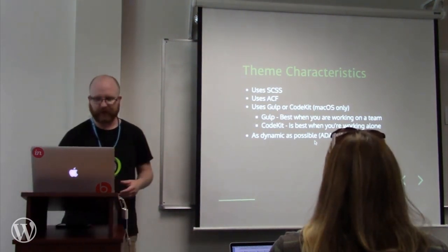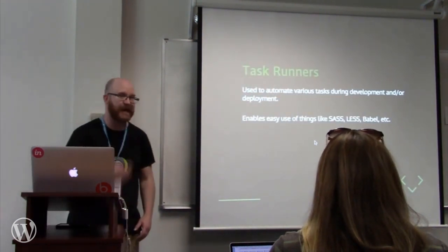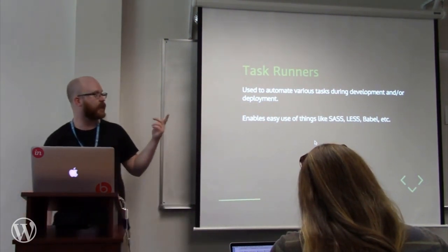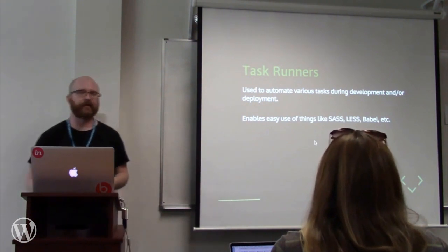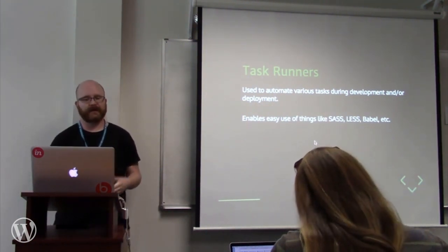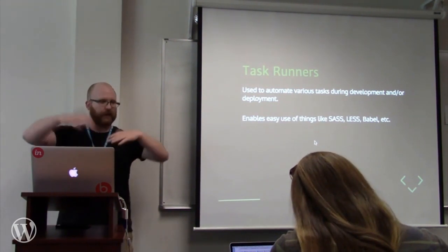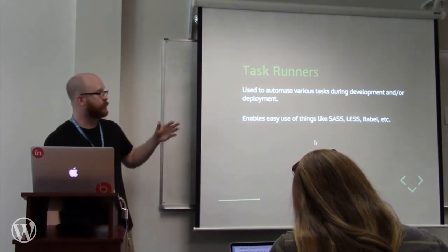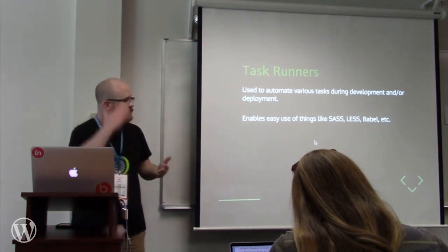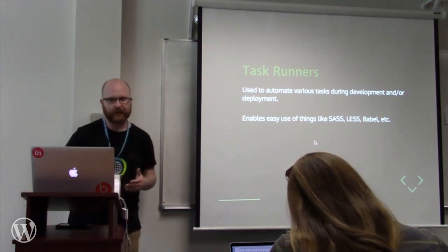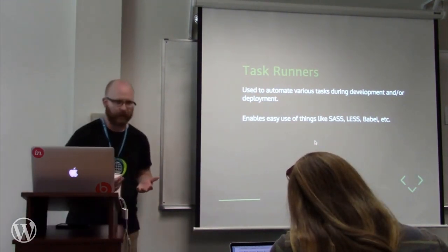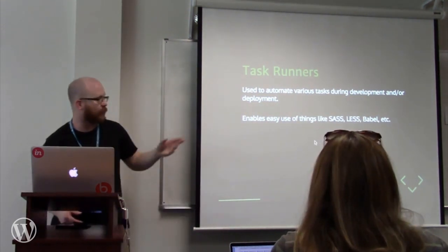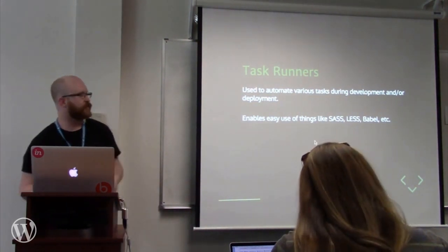Task runners like Gulp and CodeKit are tools used to automate various tasks during development or deployment. A good example is minifying files — if you want to make changes to your styles and have those files be minified and uploaded to your web server automatically on save, a task runner handles that. Task runners also let you use things like Sass, Less, and Babel — Sass and Less are preprocessors, and Babel is a transpiler that compiles modern JavaScript syntax to work in older browsers.